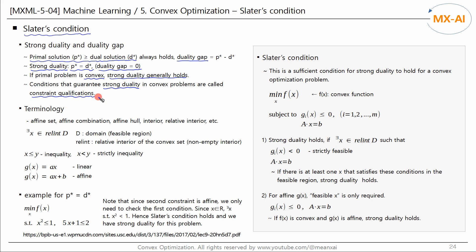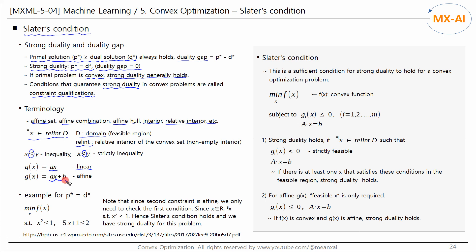To better understand convex optimization, we need to know the concepts of an affine set, affine combination, affine hull, interior, and relative interior. These concepts are not covered here. The expression means that there exists an x belonging to the relative interior D. D is the domain that is the feasible region, and the relative interior means the interior of the set D, which is not an empty set. A straight line passing through the origin is called a linear function, and a linear function with an intercept is called an affine function.